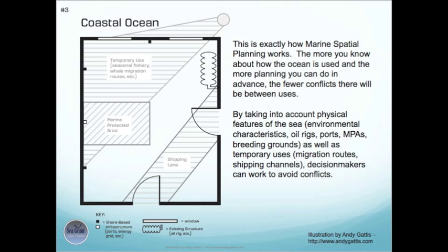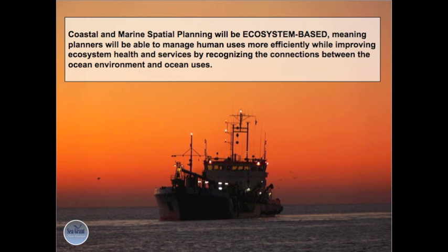Arranging your furniture based on this map will ensure that your room will be comfortable from the start. This is exactly how Marine Spatial Planning works. The more you know about how the ocean is used, and the more planning you can do in advance, the fewer conflicts there will be between uses. By taking into account physical features of the sea — like environmental characteristics, oil rigs, ports, MPAs, breeding grounds — as well as temporary uses like migration routes and shipping channels, decision makers can work to avoid conflicts. Coastal and Marine Spatial Planning will be ecosystem-based, meaning planners will be able to manage human uses more efficiently while improving ecosystem health and services by recognizing the connections between the ocean environment and ocean uses.